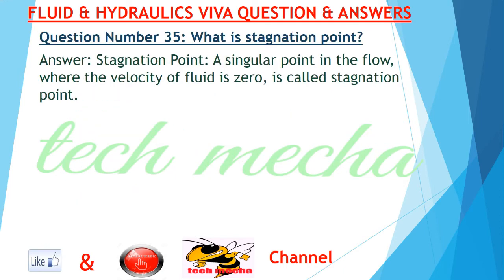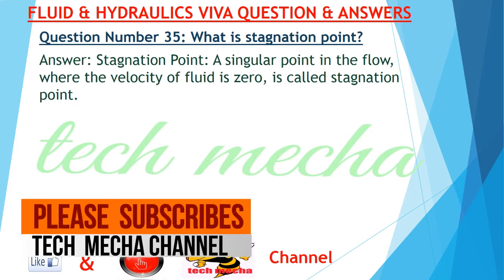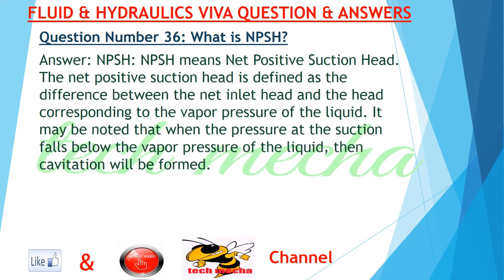Question number 35: What is stagnation point? Answer: A singular point in the flow where the velocity of fluid is zero is called stagnation point. Question number 36: What is NPSH? Answer: NPSH means Net Positive Suction Head. It is defined as the difference between the net inlet head and the head corresponding to the vapor pressure of the liquid. It may be noted that when the pressure at the suction falls below the vapor pressure of the liquid, cavitation occurs.